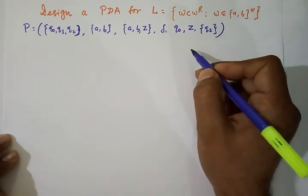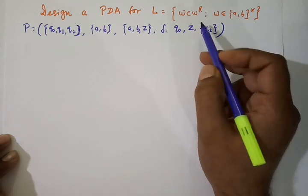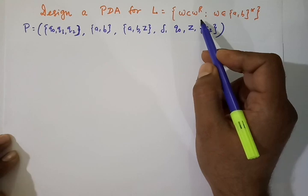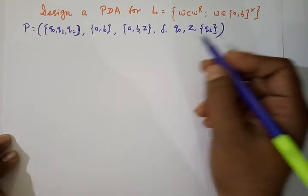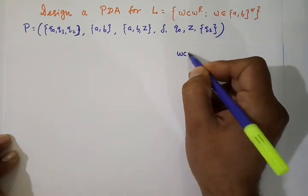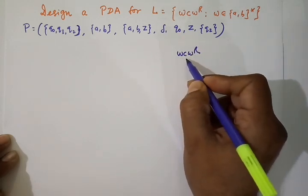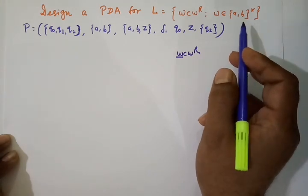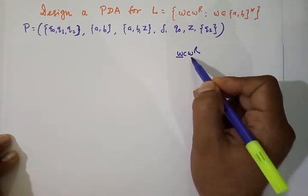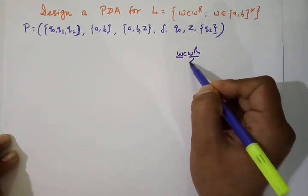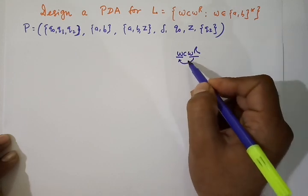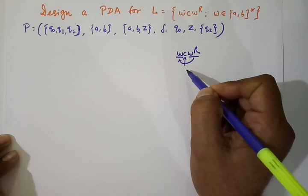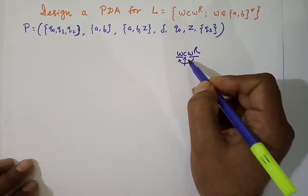Before defining the delta function, we must look at the form of strings our PDA is going to accept. Strings are in the form WCW^R, where W is any string over A and B including null. W^R is the reverse of W, and in between there is the symbol C. So we can clearly define the middle of the string.